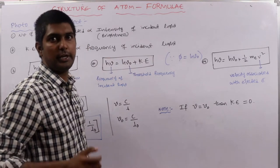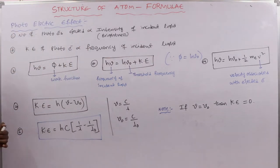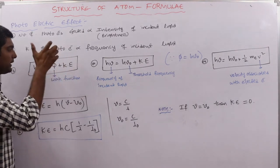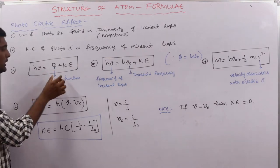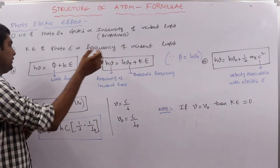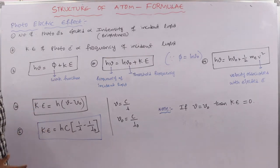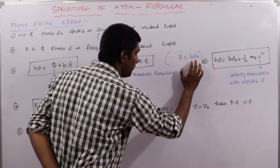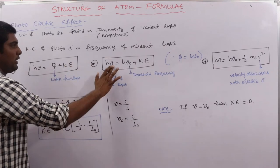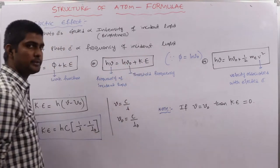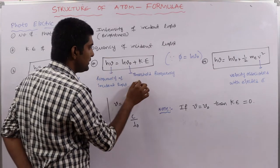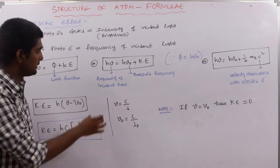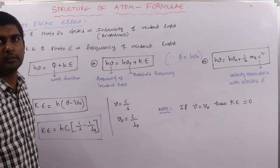The total energy relation is: hν = work function (φ) + kinetic energy. The work function φ is the minimum energy required to eject an electron from the metal surface. Substituting φ = hν₀ gives hν = hν₀ + KE, where ν₀ is the threshold frequency.